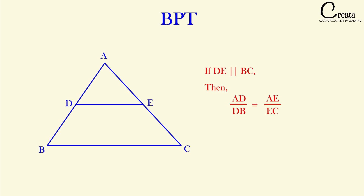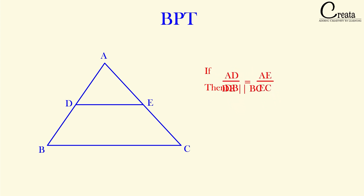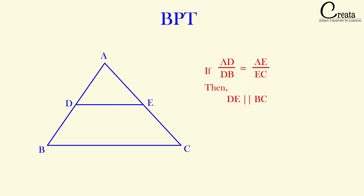We have also done the converse of the BPT theorem: if AD upon DB is equal to AE upon EC, then DE and BC will be parallel to each other. This is the conclusion from the previous lecture. In this lecture we will do the questions related to these two concepts — the BPT theorem and its converse. Let's take our first question, Example number 1 of NCERT.